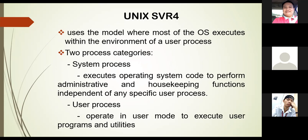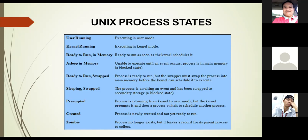Unix SVR4 is used as the model where most of the OS executes within the environment of a user process. There are two process categories: system processes and user processes. System processes execute operating system code to perform administrative and housekeeping functions independent of any specific user process. User processes operate in user mode to execute user programs and utilities. Unix process states include: user running — executing in user mode; kernel running — executing in kernel mode.